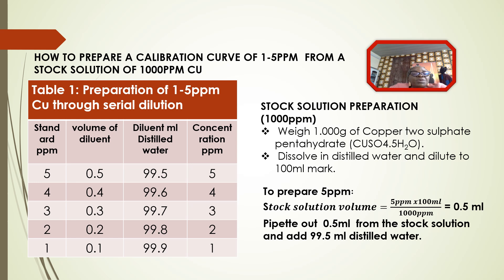Also pipette 0.4 ml and add 99.6 ml of distilled water to make a concentration of 4 ppm. Pipette 0.3 ml and add 99.7 ml to make 3 ppm. Pipette 0.2 ml and add 99.8 ml of distilled water to make 2 ppm. And pipette 0.1 ml and add 99.9 ml to make 1 ppm.